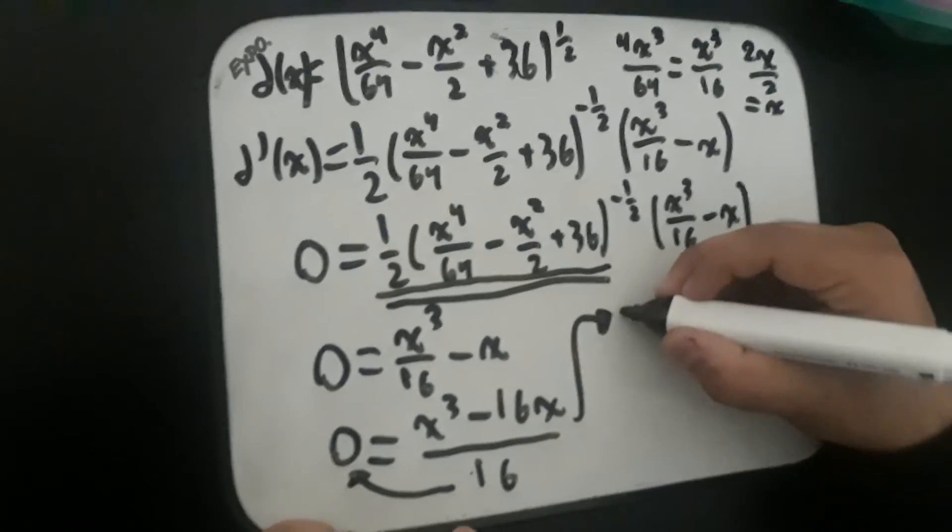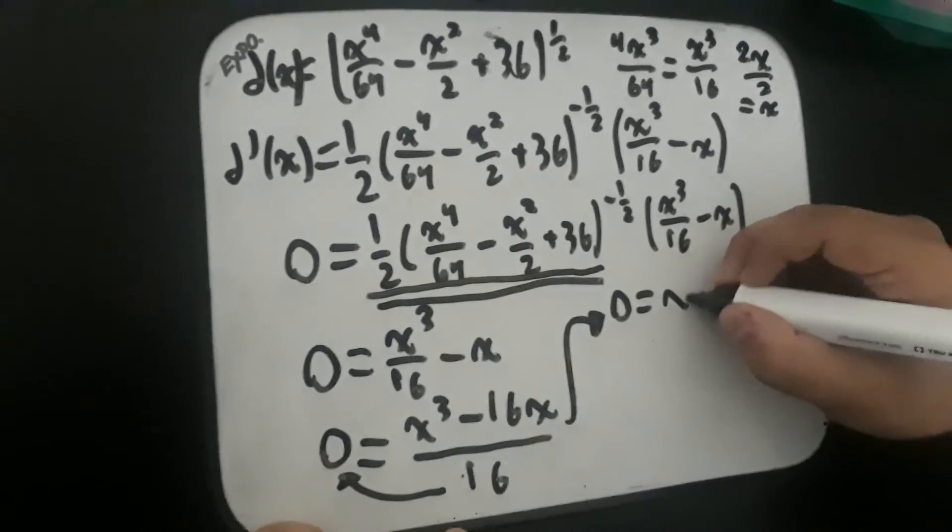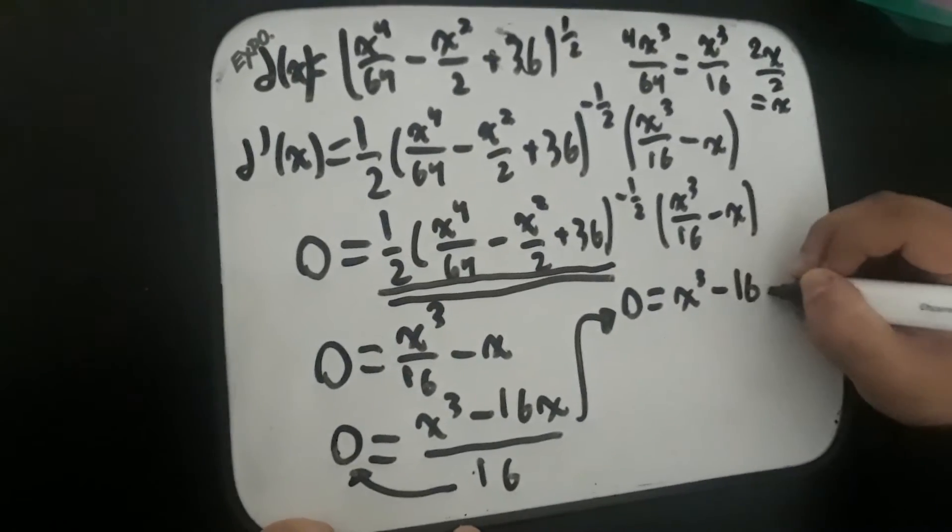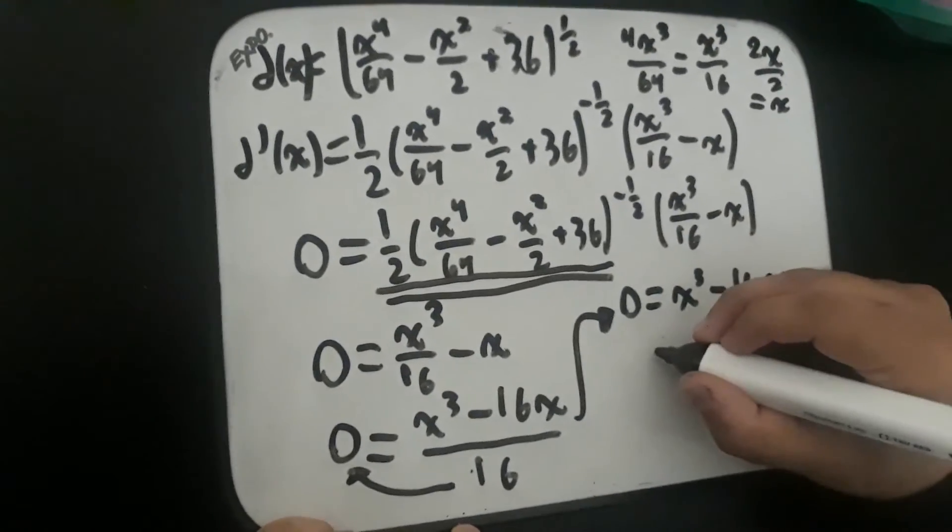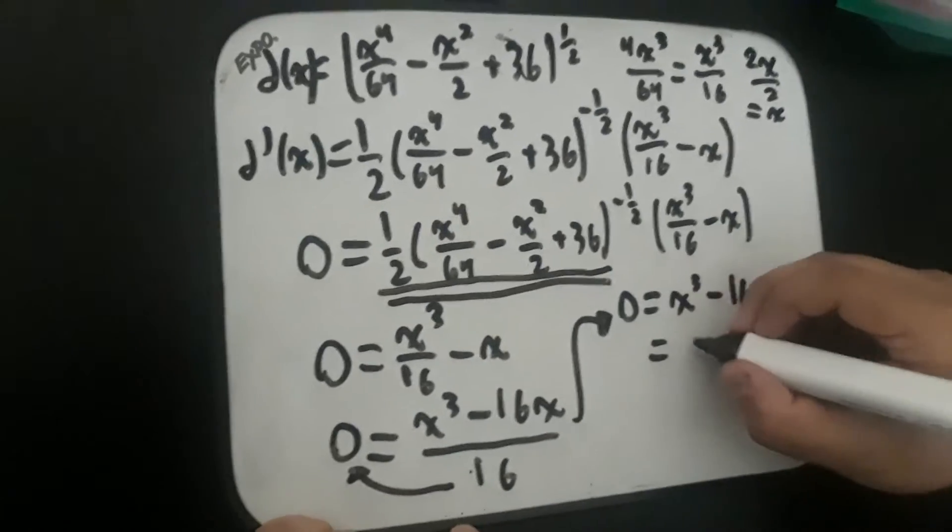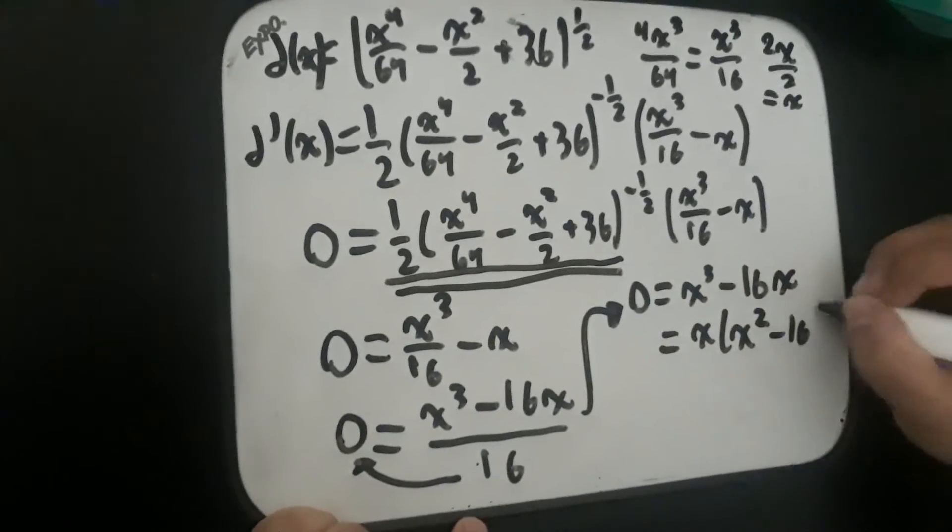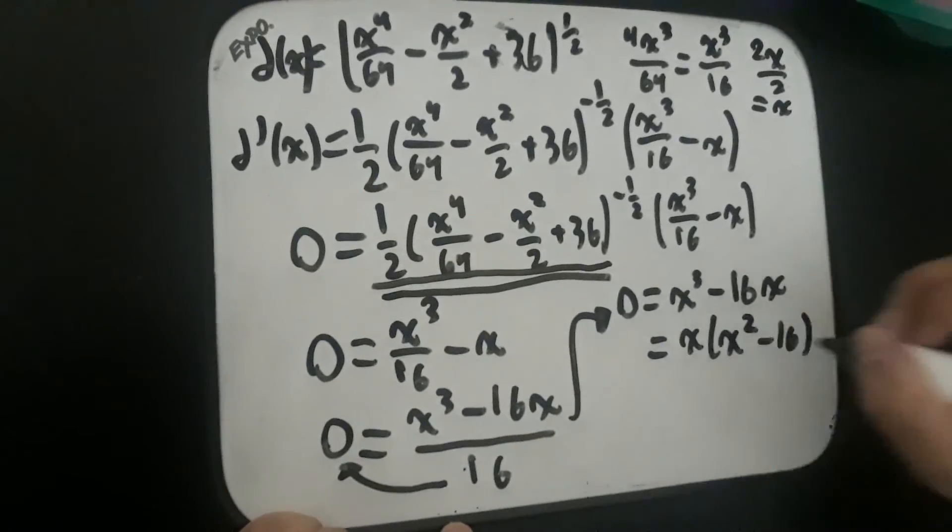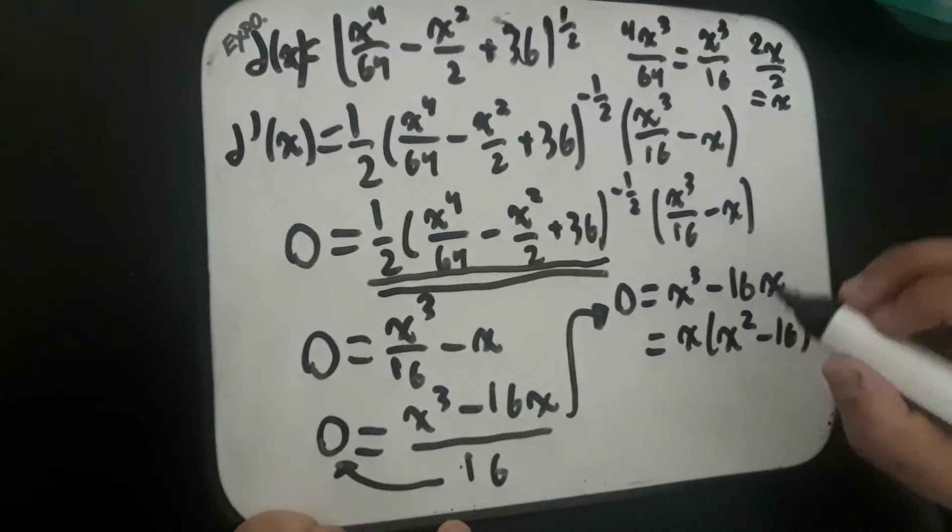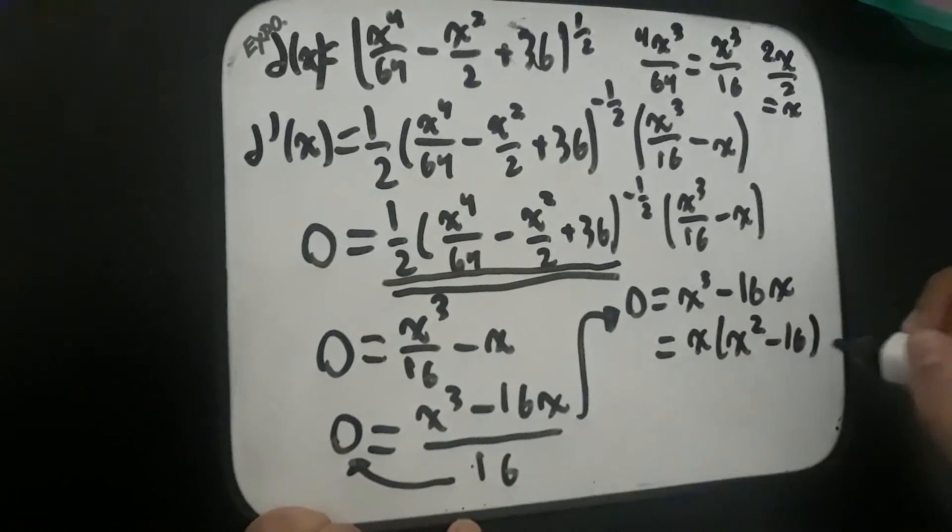And so that becomes 0 equals x cubed minus 16x. And you can factor out the x, which leaves x squared minus 16.